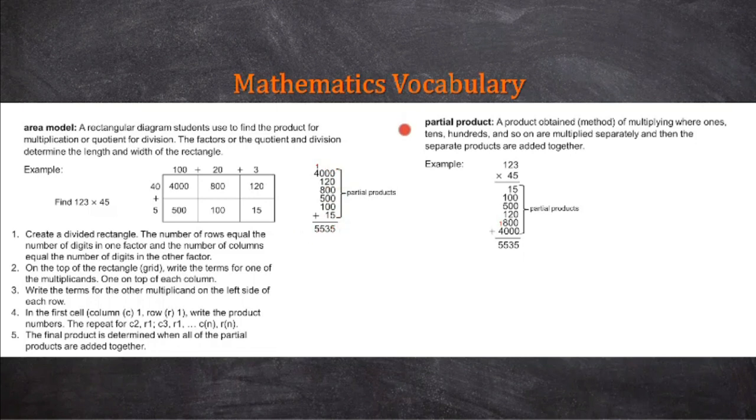For the partial product it's a very similar process. We're still just multiplying like our ones, 5 ones times 3 ones we get 15, and 5 ones times 2 tens we're going to get 100. If you look closely you'll see that the partial products from the area model and the standard algorithm are the same. It's just two different ways to get the same answer.